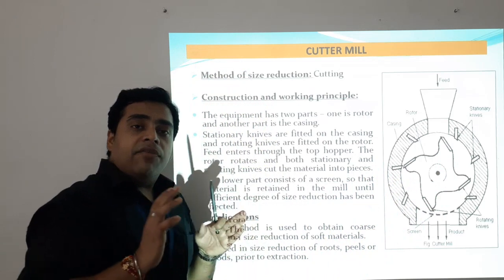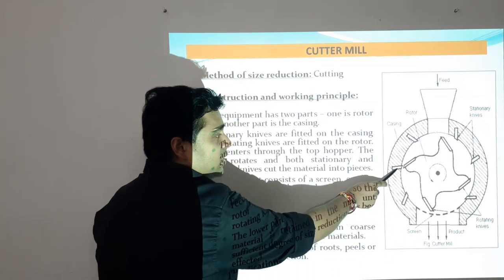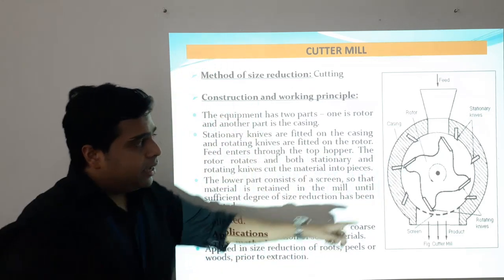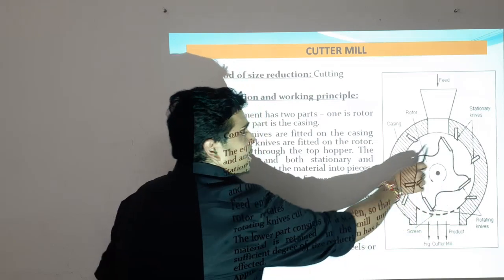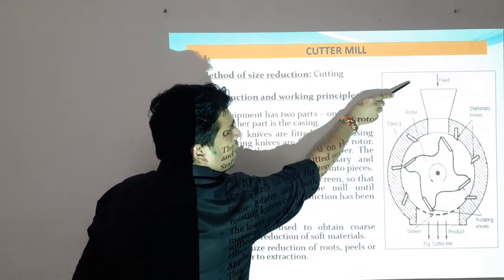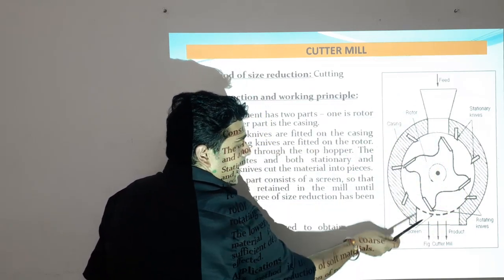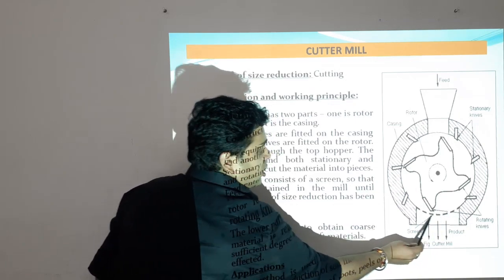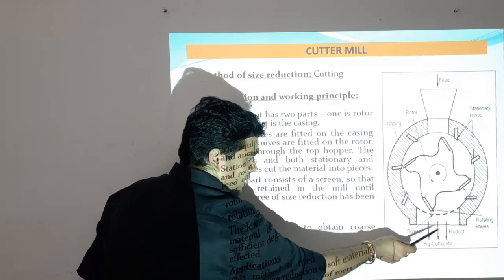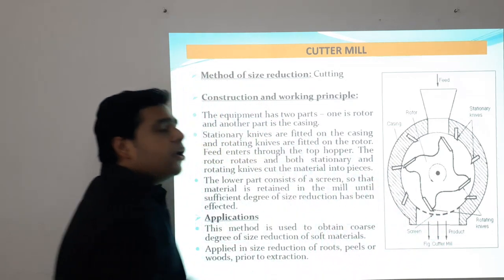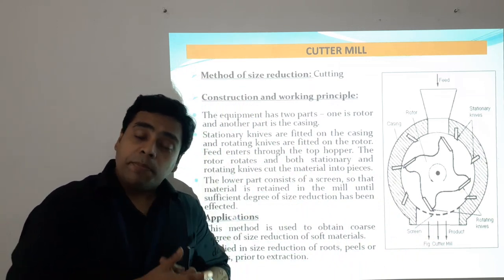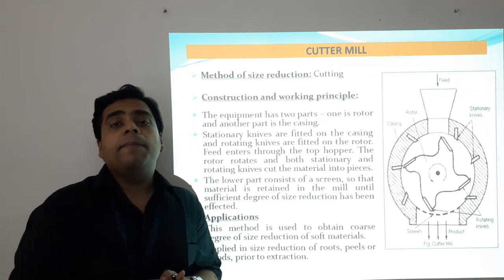In the cutter mill, we have two types of knives: the stationary knives fixed in the casing part, and the movable knives fixed in the blade or rotor attachment, which rotates. Feed comes in, is cut, and then passes through a sieve or shaped screen. The reduced material comes through the screen and the product is collected from there. The cutter mill is very useful for materials that need to be cut, such as plant parts.